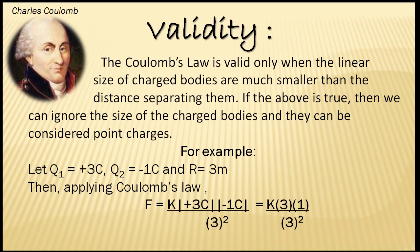Let us take an example. Let Q1 equals plus 3 coulombs and Q2 equals minus 1 coulomb and R equals 3 meters. Then applying coulomb's law we get F equals K times the magnitude of plus 3 coulomb multiplied by the magnitude of minus 1 coulomb divided by 3 square, which equals K times 3 into 1 divided by 3 square.